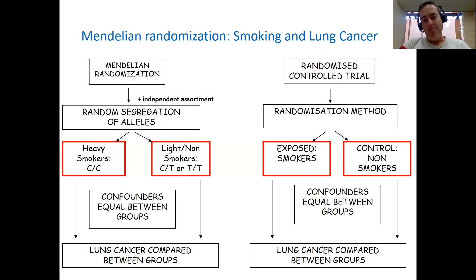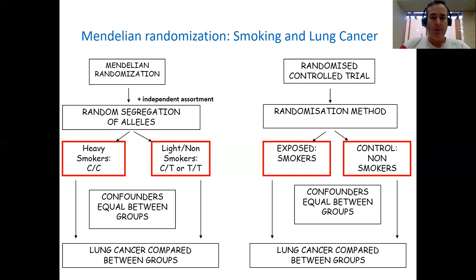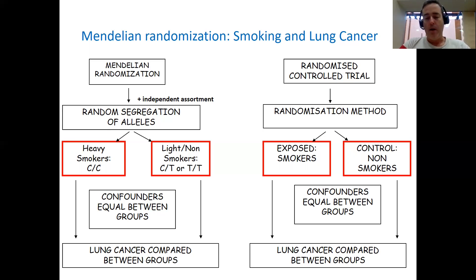Obviously, this is an impractical and unethical study we could never do for real. But fortunately, Mendelian randomization offers us a natural experiment to provide information on the causal relationship between smoking and lung cancer. We can take a variant known to relate to heaviness of smoking — such variants exist from genome-wide association studies. For example, there is a variant in one of the nicotinic receptor genes, CHRNA5, related to how heavily individuals smoke. Individuals carrying that variant are more likely to smoke more heavily and to inhale more deeply.